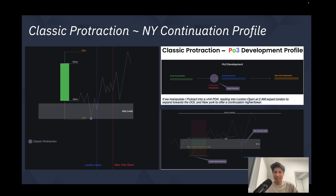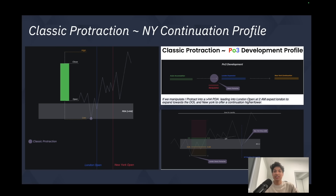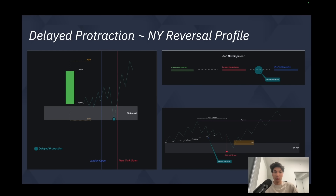Structurally, we look to see where the low of the day might be made and find arguments to justify that low staying intact. We use PD arrays like swing lows and fair value gaps, or swing highs and fair value gaps, to justify that the low of the day has been made. We then pair that with market structure and delivery states to determine which protraction profile we're in.